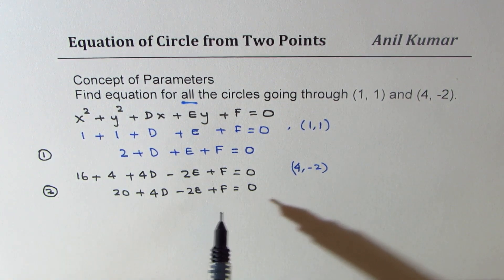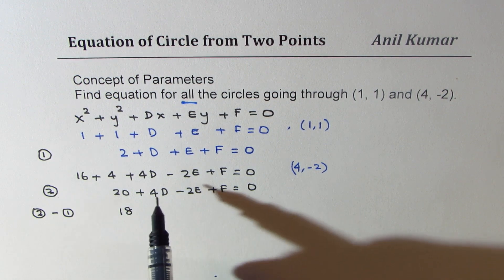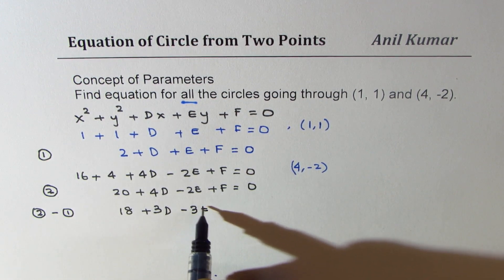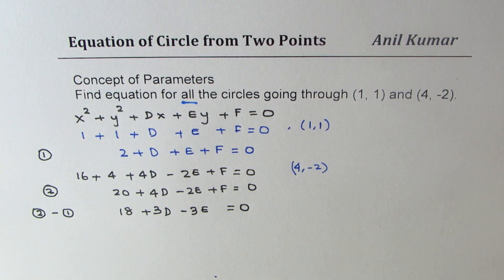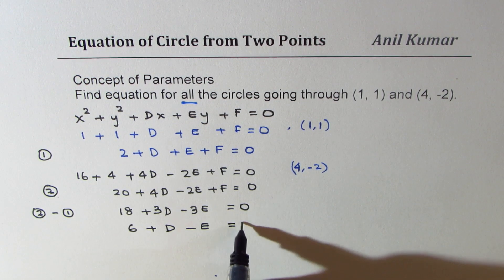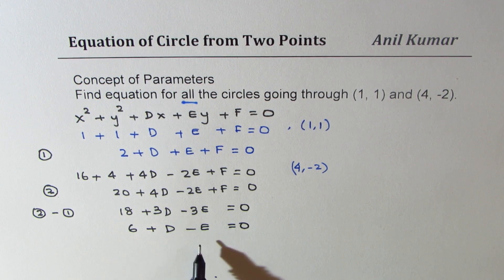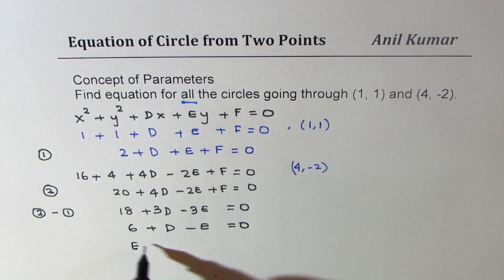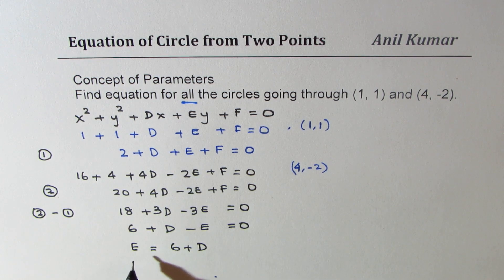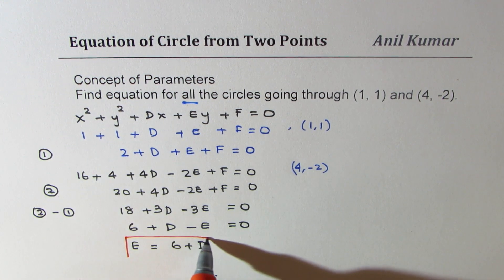Now from here, if I do equation 2 minus equation 1, we get 18 + 3d - 3e = 0. Dividing by 3, I could write this as 6 + d - e = 0. So we get an equation which relates e and d. From here, I can write e as equal to 6 + d. So I got one parameter in terms of the other, e as 6 + d. Let me highlight this equation.